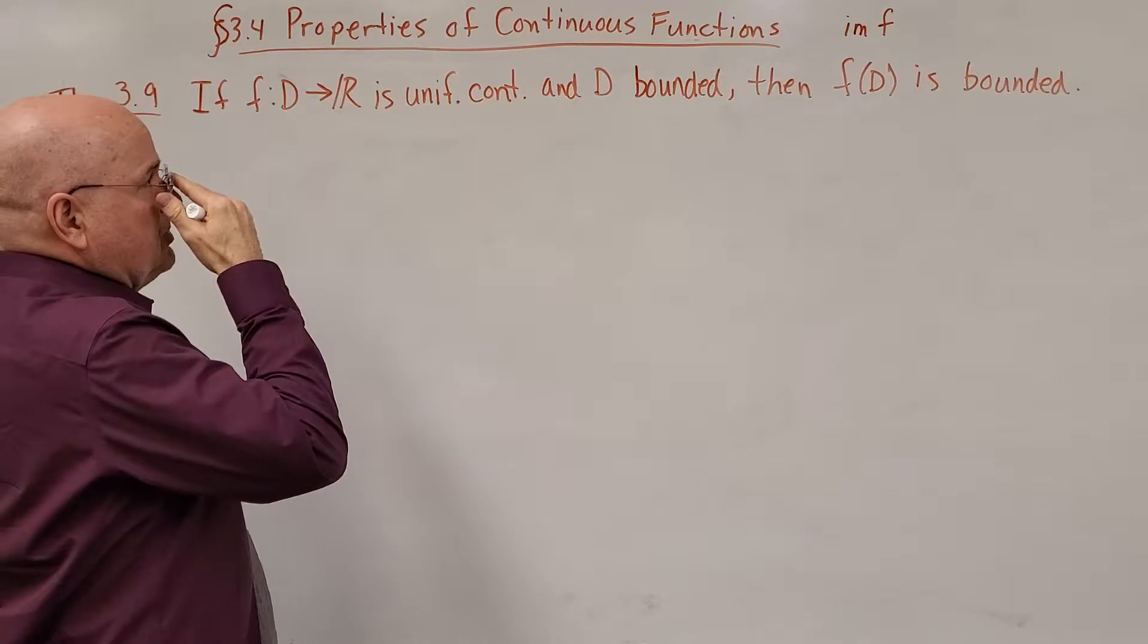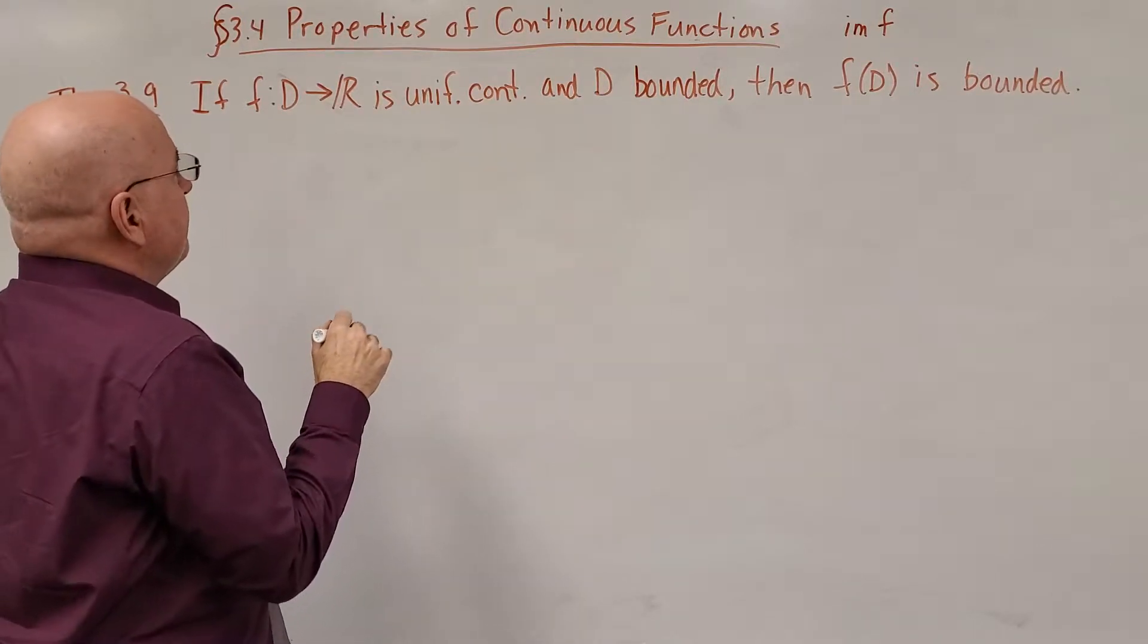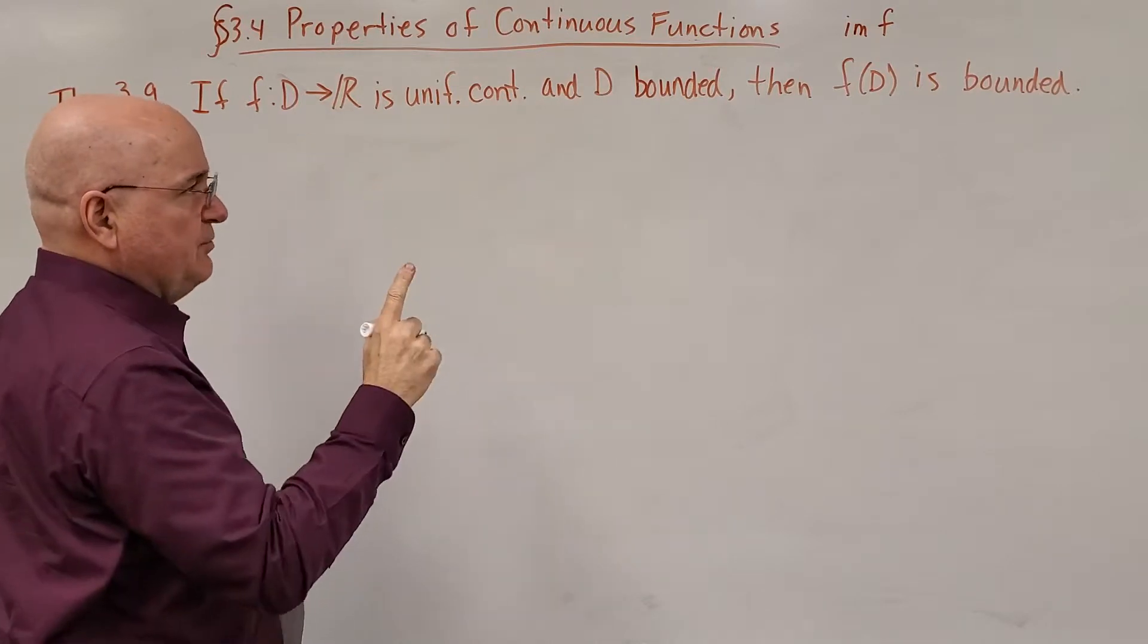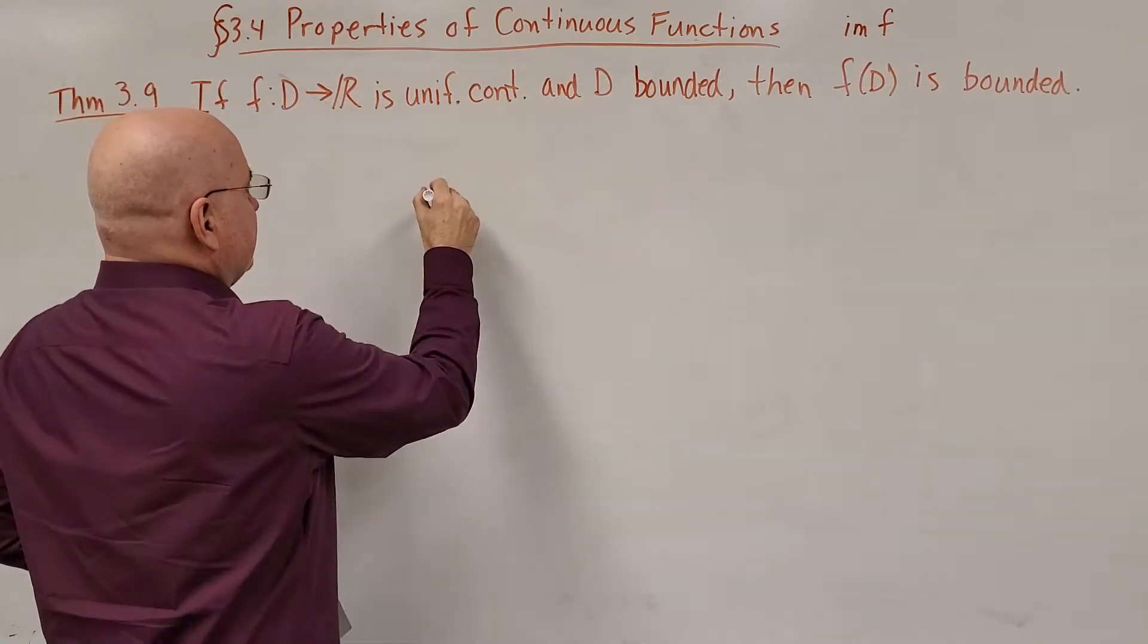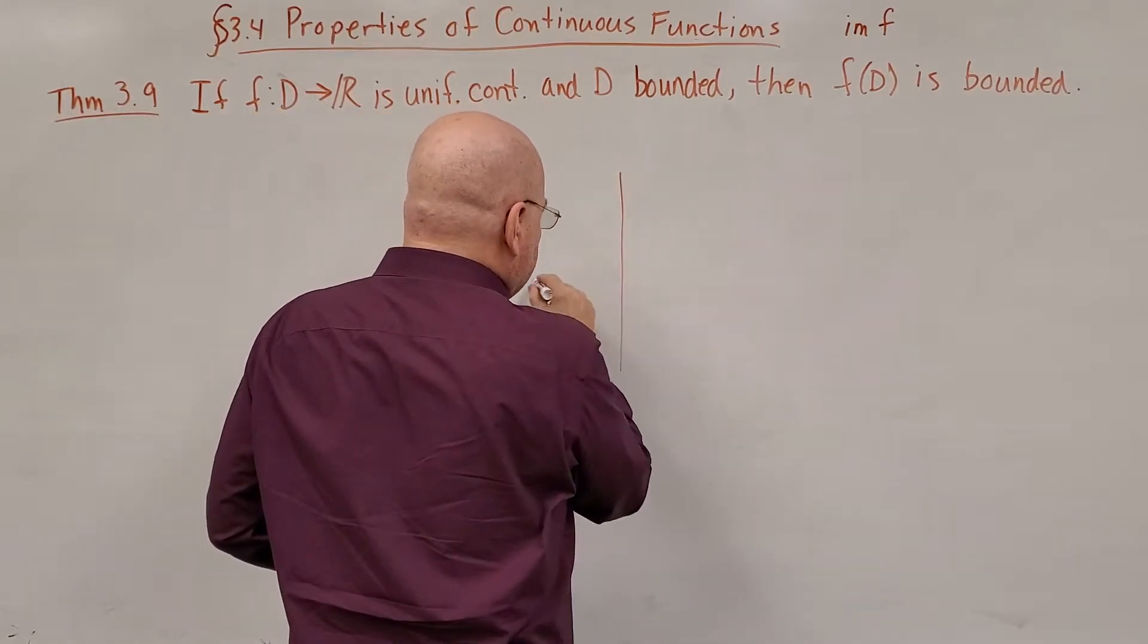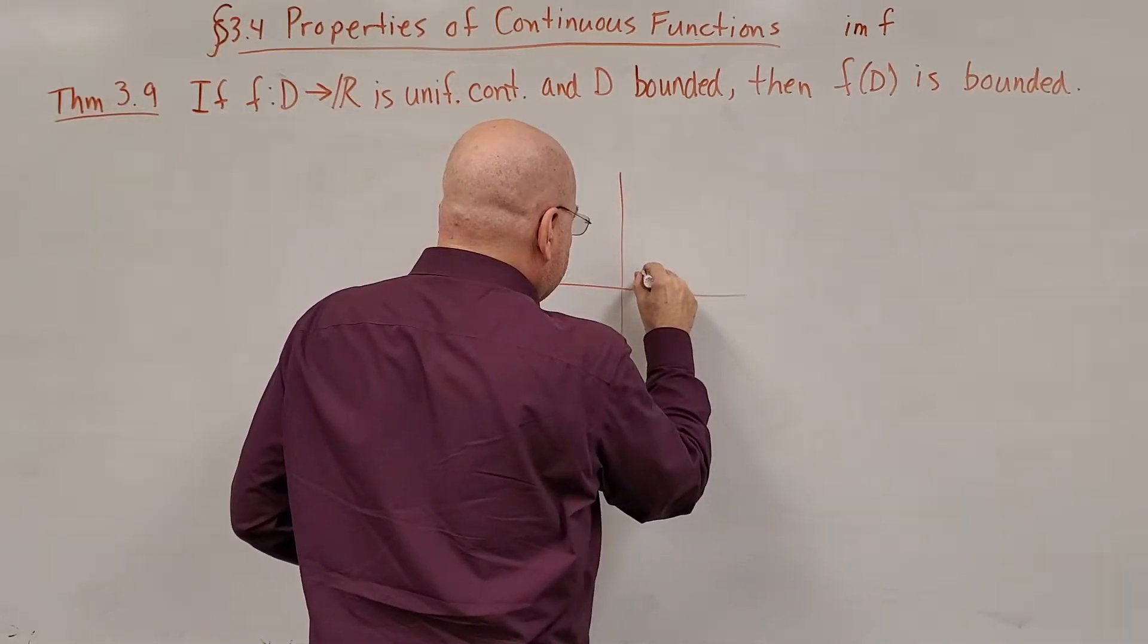First, let's make sure we're sure what we're talking about. Let's look at an example that would fail because it's not uniformly continuous. If we took the function f(x) equals 1 over x, well, we know what the graph of that looks like.